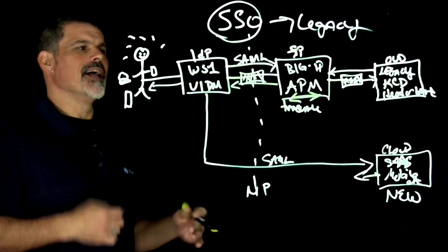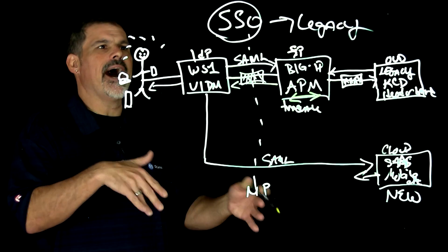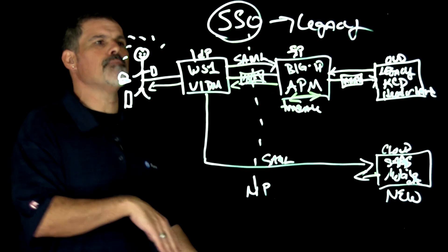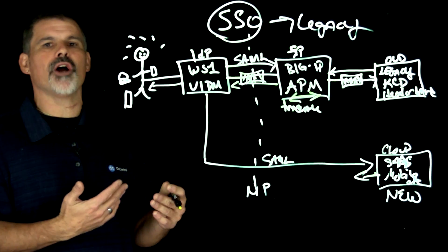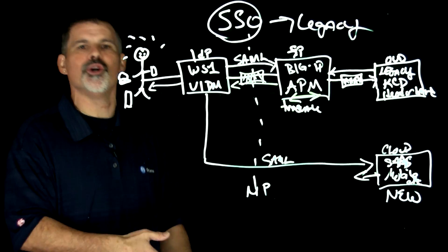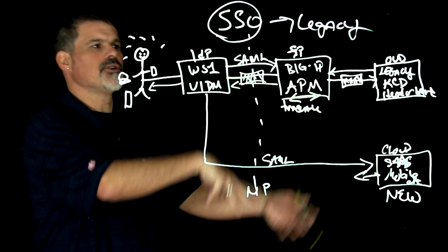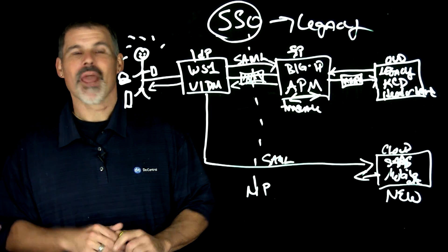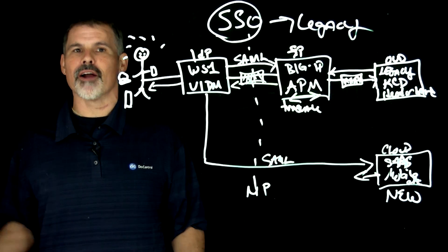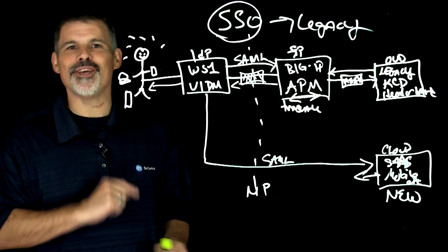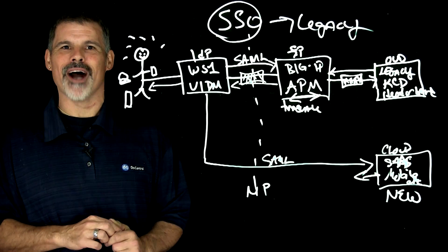So there you have it. A lightboard lesson on how big IP, specifically F5 and VMware, can provide single sign-on to all of your applications, old or new, cloud-based or data center legacy-based. If you like this video, check out our other videos. You can subscribe to YouTube. I'm Peter, and we'll see you in the community. Thanks for watching.